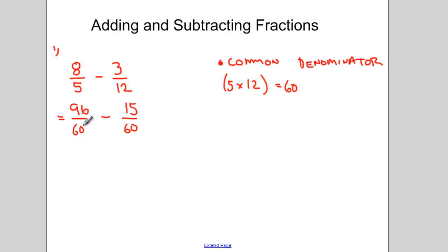Once I've converted my fractions in a way that they have a common denominator, my next step is to add, or in this case subtract, the numerators only. So my denominator stays the same. My denominator will be 60. And I'm adding, or in this case subtracting, the numerators. 96 take away 15 is 81.